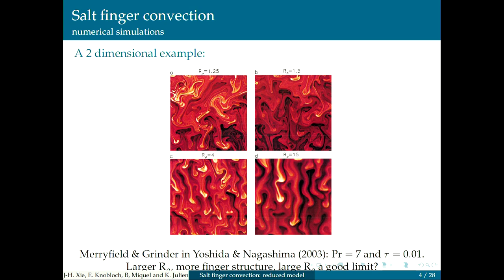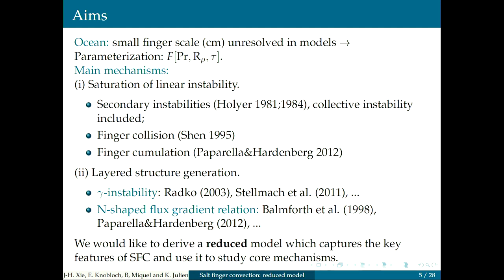This is what the instability looks like in 2D calculations — 3D calculations are also available. You set up the density and salinity profiles as indicated, run an initial value problem, and see the formation of structures depending on the parameter R₀, the density ratio. For larger values of R₀ you see nice fingers — the hot salty fingers descending, with cold fresh fingers rising in between. That's the process. It's driven by diffusion; it's not a dynamical instability. I want to get a simplified description to determine the saturated or statistically stationary state.